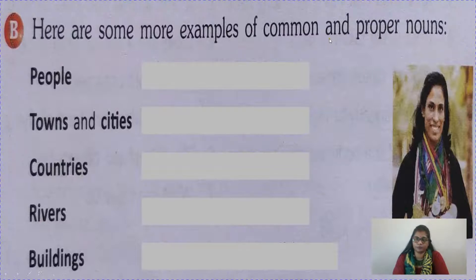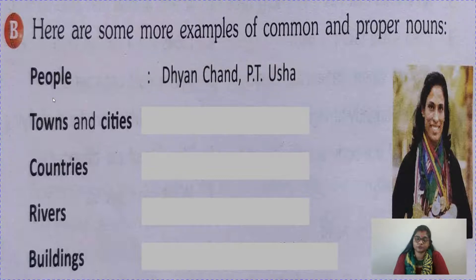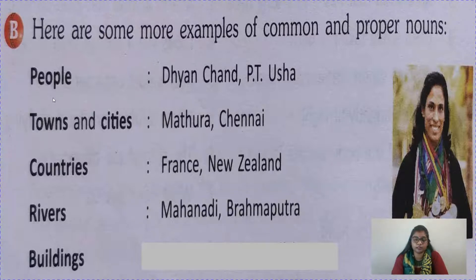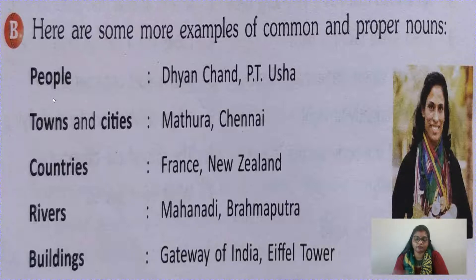Here are some examples of common and proper nouns. On the left-hand side all the common nouns are written, and the proper nouns correspond to them. When we say 'people,' there are so many people — but Dhyan Chand, P.T. Usha, Sachin Tendulkar, Mayan Singh, Dhoni — these are proper names of particular persons. Towns and cities: Mathura, Chennai. Countries: France, New Zealand, India, America. Rivers: Mahanadi, Brahmaputra, Ganga, Yamuna, Saraswati. Buildings: Gateway of India, India Gate, Eiffel Tower, Taj Mahal, Red Fort.